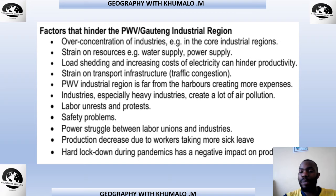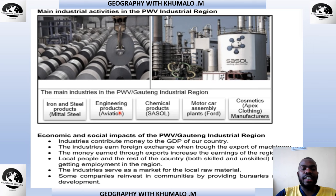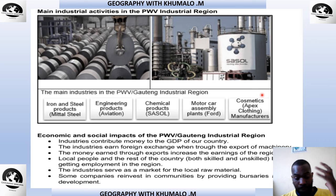Now let's look at the main industrial activities taking place in the PWV: iron and steel, engineering products, chemical products from Sasol, motor car assembly plants such as Ford in Pretoria, and cosmetics — products used for bathing and personal care.